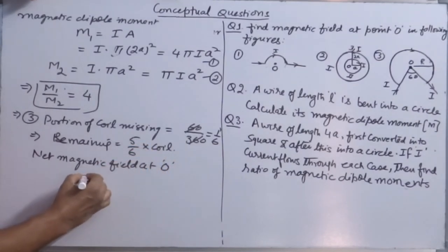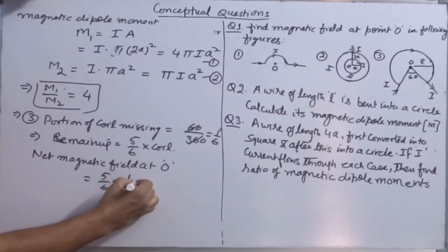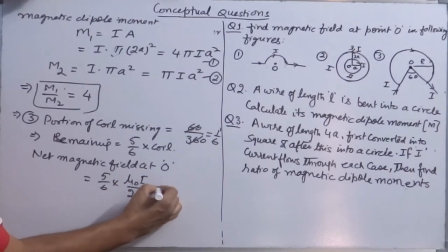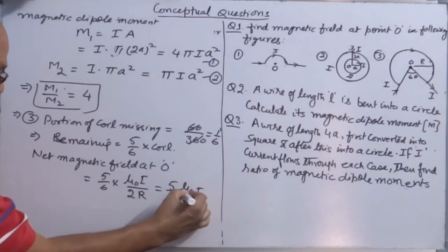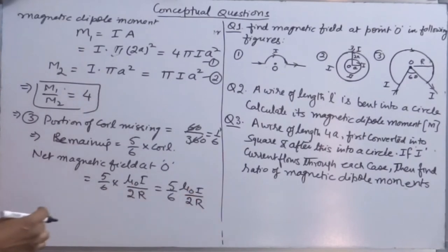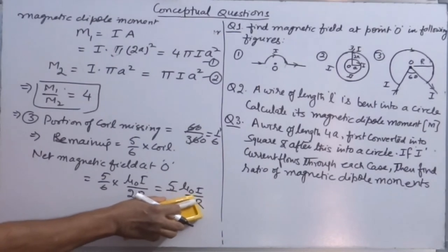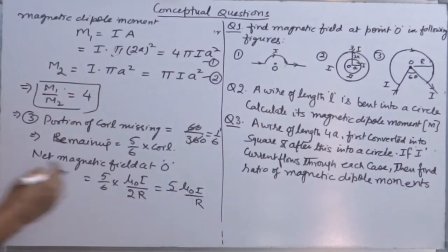This is 5/6 of the magnetic field at the center of a coil: 5/6 × μ₀I/2R. The answer is 5μ₀I/12R. This is the answer for the third.